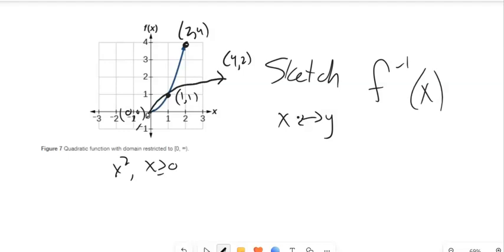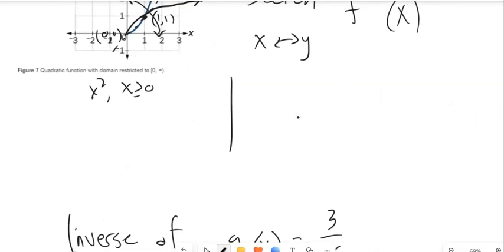Inverses will reflect across y equals x because inputs and outputs are getting switched. So if I had a graph that looked like this, and I wanted to sketch its inverse,